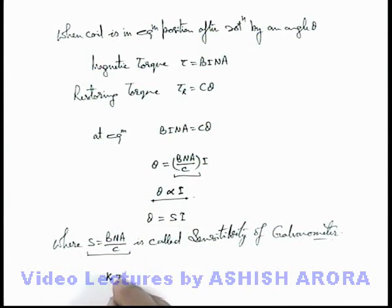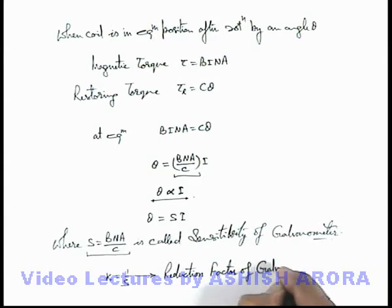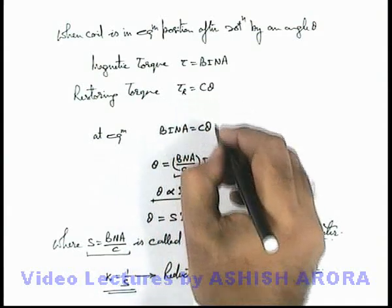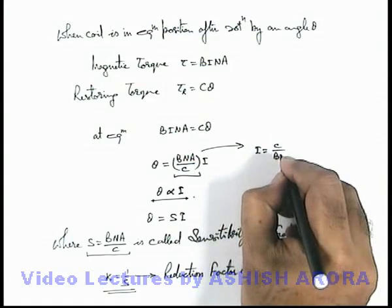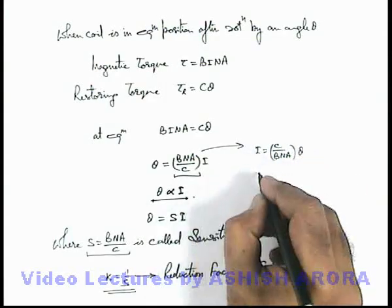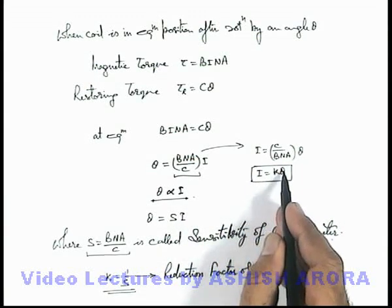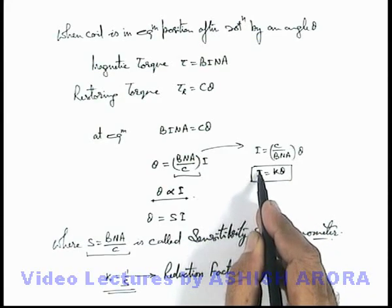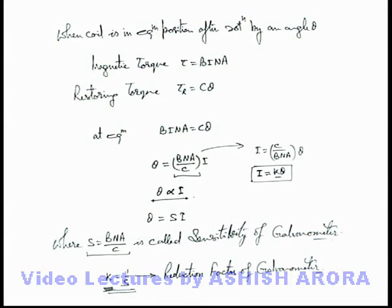The sensitivity S is so called because if the value of S is high, then even for a small value of current the deflection will be large, and the galvanometer is capable of measuring small values of current. There is another constant defined as k, which is 1/S, and this is called the reduction factor of the galvanometer. From this relation, i equals (c / B·n·a) multiplied by theta, so i equals k·theta. Using a measured deflection theta, we can find out the value of current passing through the galvanometer, and the proportionality constant k is termed the reduction factor of the galvanometer.